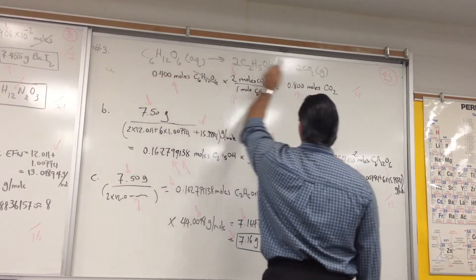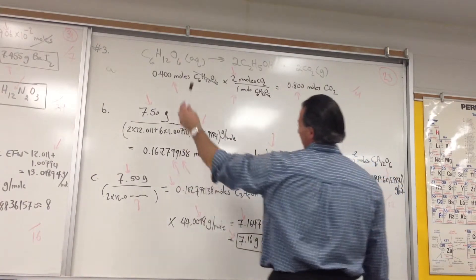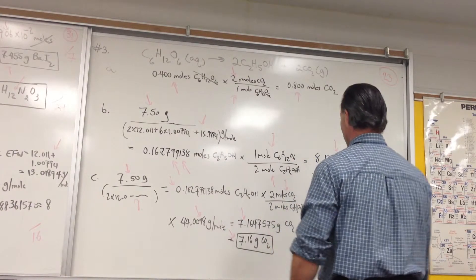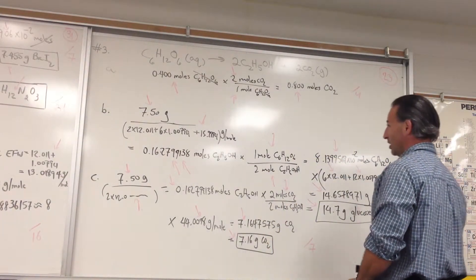So, for every 1 mole of glucose, you're going to get 2 moles of CO2. But we have 0.4 moles of glucose, multiplied by 2, you get 0.8 moles of CO2. That's worth the 4 marks.